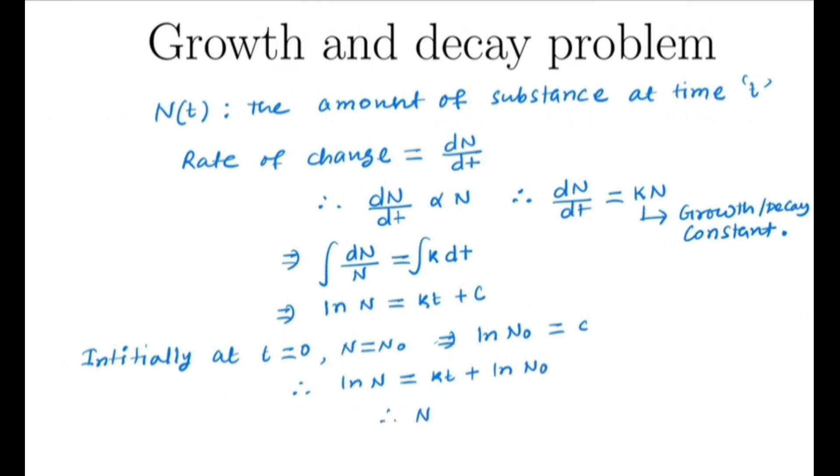By simplifying, we get N equals N₀ e^(kt). So N₀ e^(kt) is the amount of substance at time t, where k is the growth or decay constant. Now, look at an example.